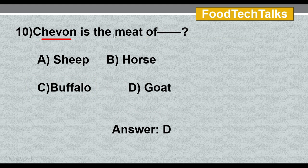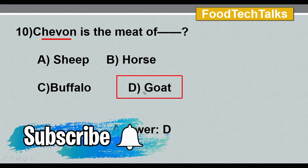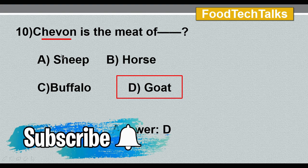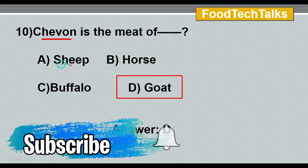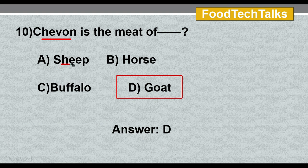Tenth question: chevon is the meat of which animal? Options: A) sheep, B) horse, C) buffalo, D) goat. The answer is option D, goat. Chevon is the meat of goat. Sheep meat is called mutton, horse meat is called chevaline, and buffalo meat is called carabeef.